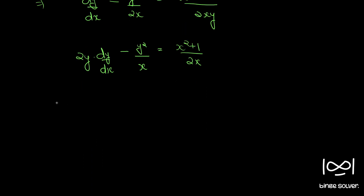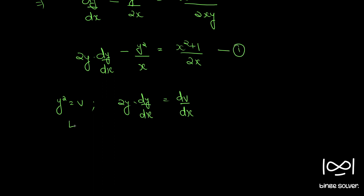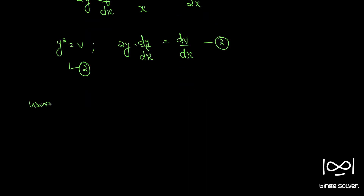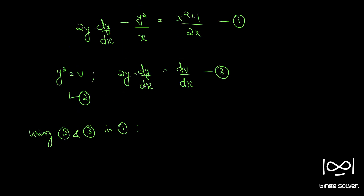Now if we put v equal to y squared, we have 2y times dy/dx equal to dv/dx. Using this substitution, equation 1 becomes: dv/dx minus v/x equals x squared plus 1.